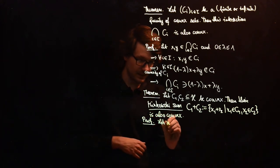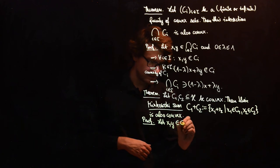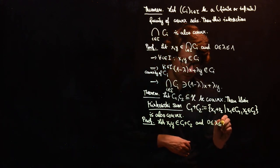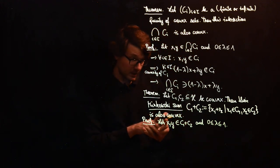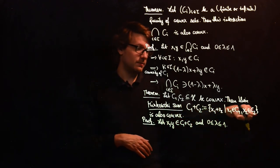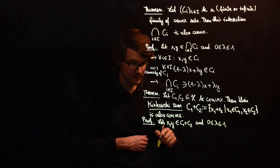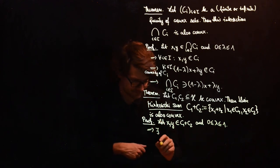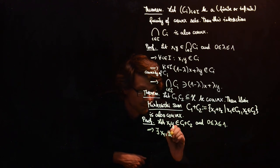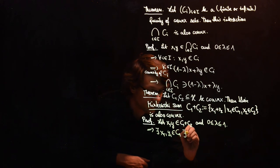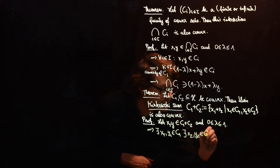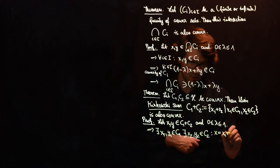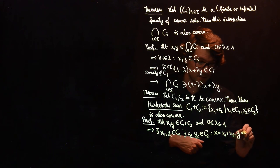Let's prove this. Again by definition: let x and y be in C_1 + C_2, and let lambda be between 0 and 1. From this we know there is a decomposition into the sum of an element in C_1 and an element in C_2 — for both x and y. So there exist x_1, y_1 in C_1 and x_2, y_2 in C_2 such that x = x_1 + x_2 and y = y_1 + y_2.